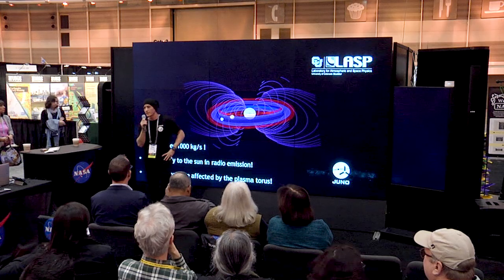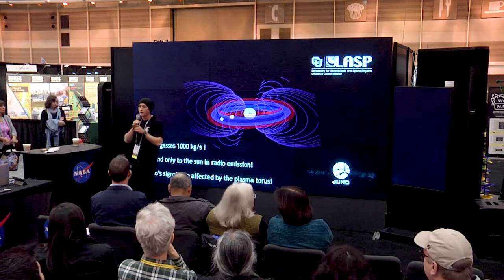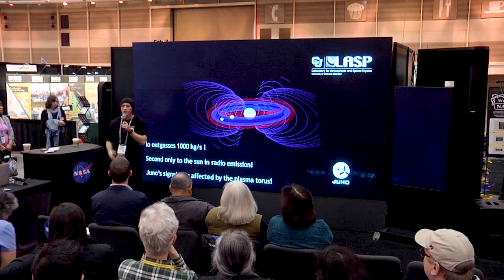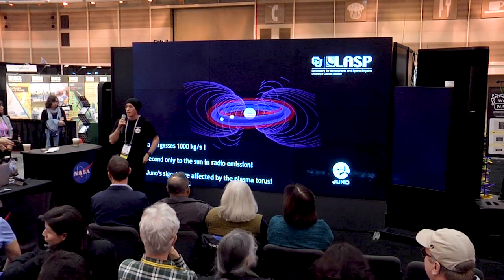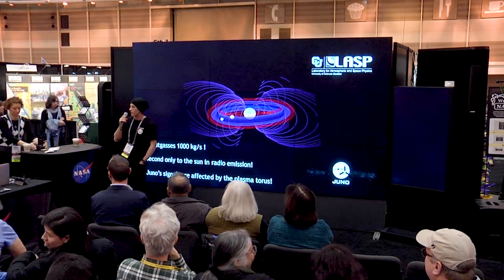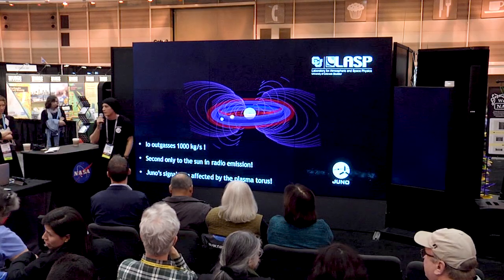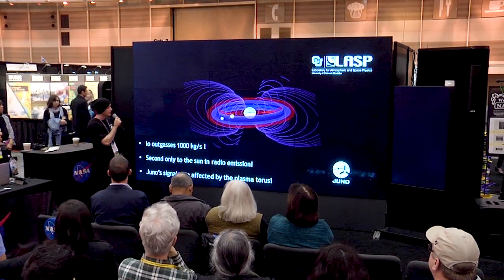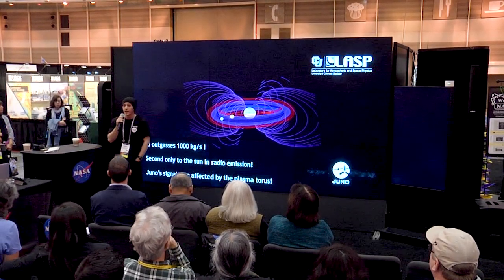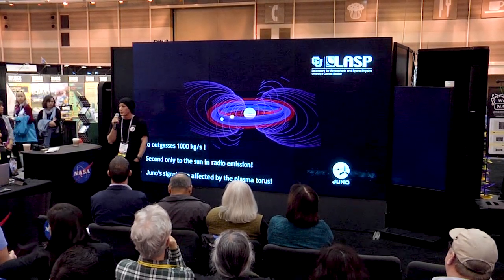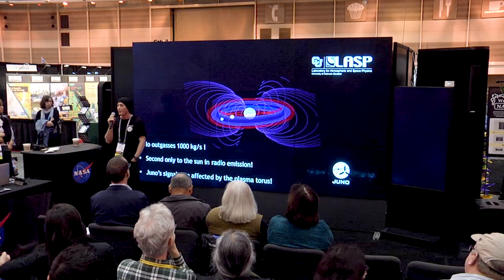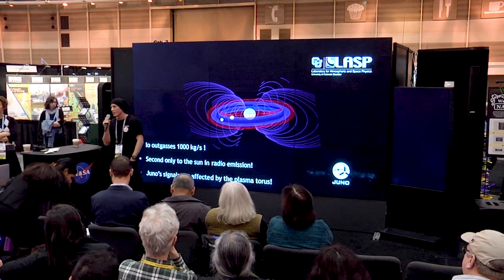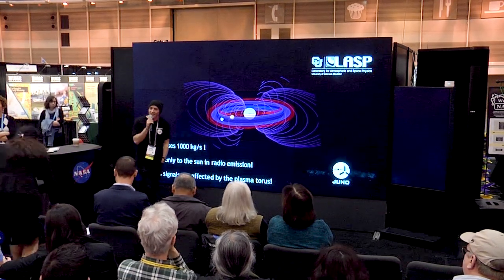My name is Parker Hinton. I'm an undergraduate at the University of Colorado at Boulder. I do my research at the Laboratory for Atmosphere and Space Physics. I'll be presenting to you today on the story of how I visualized the Io plasma torus.